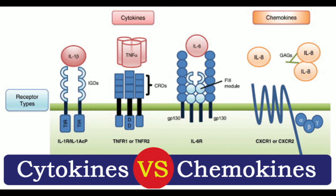6. Functions: Cytokines help as signaling molecules, mediating and regulating immunity, inflammation, and hematopoiesis. They are also critical controllers of cell and tissue growth, migration, development, and differentiation. Chemokines direct the migration of white blood cells to infected or damaged tissues, guiding cell movement towards a target location, and are implicated in both immunological reactions and homeostasis of the immune system.